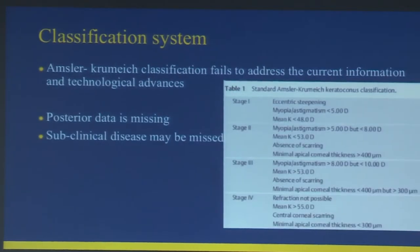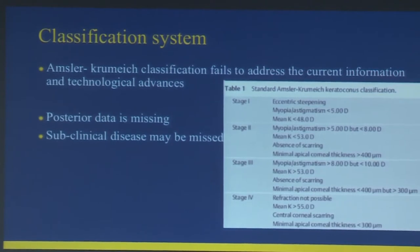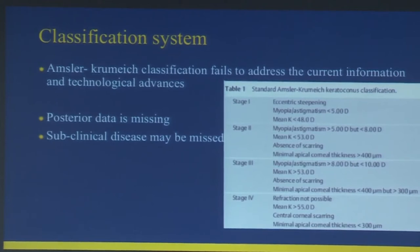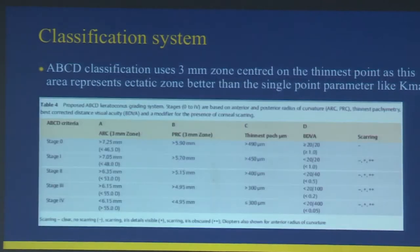The old Amsler-Krumeich classification introduced in 1947 is still used at some places, but it is hardly of any use. It doesn't provide any data on the posterior cornea, and subclinical disease can easily be missed — in more than 90% of cases.